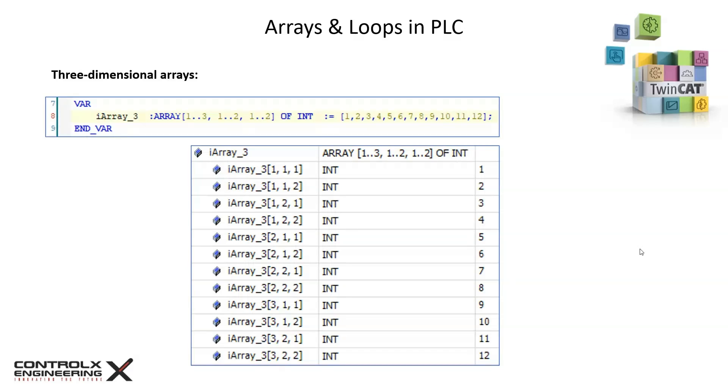Similarly, we can declare higher dimensional arrays. In this example I'm showing a three-dimensional array of 12 elements with initial values from 1 to 12 and how they look in runtime. Index 1 of the first dimension gets filled up first, followed by the second dimension and loops through all the indices of the third dimension.